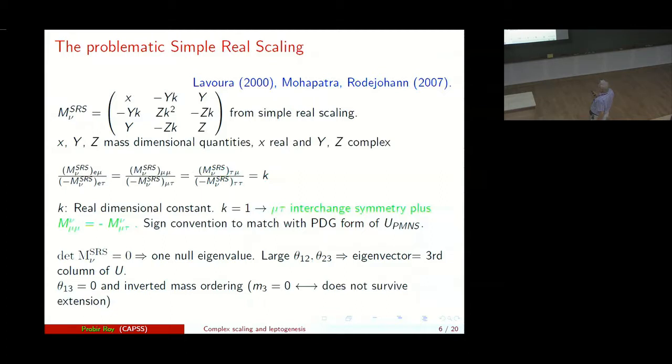Now Lavoura in 2000, which is revived again by Mohapatra and Rodejohann in 2007, proposed this simple scaling hypothesis, real scaling hypothesis. So that tells you we have chosen a certain sign convention so that our unitary mixing matrix matches exactly to the PDG form of U_PMNS. So we need to put in some negative signs but basically that E_mu to E_tau, V_mu_mu to V_mu_tau and V_tau_mu to V_tau_tau, these ratios are the same simple scaling real constant k. When you put k equals 1, you recover mu-tau interchange symmetry plus the additional relation that the mu-mu element is the same negative as of mu-tau.